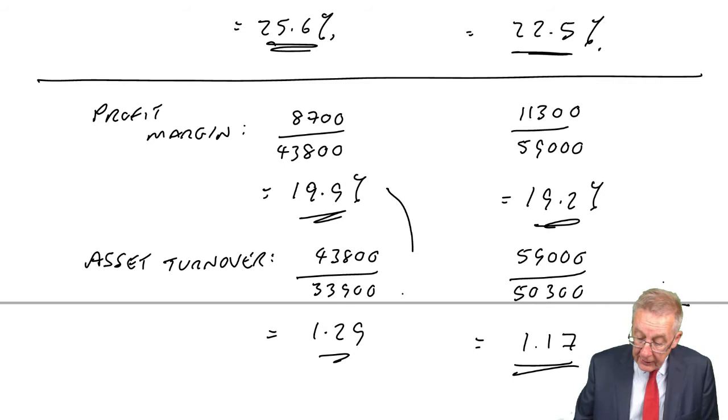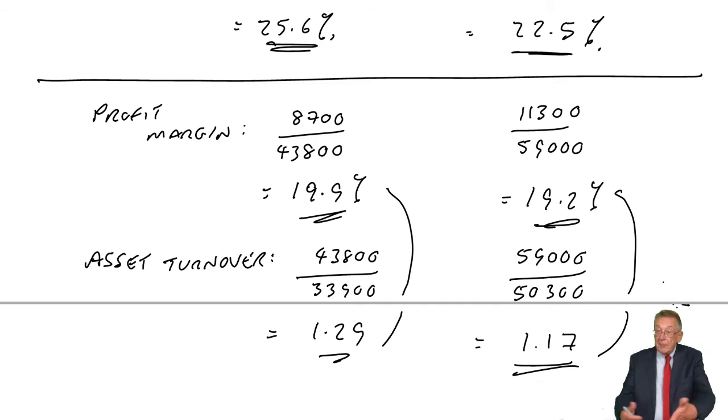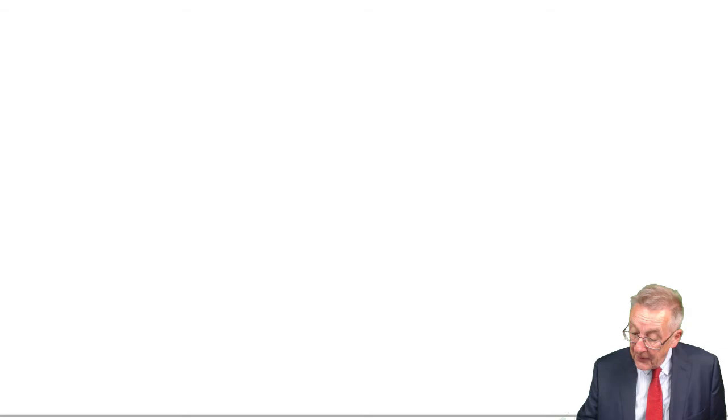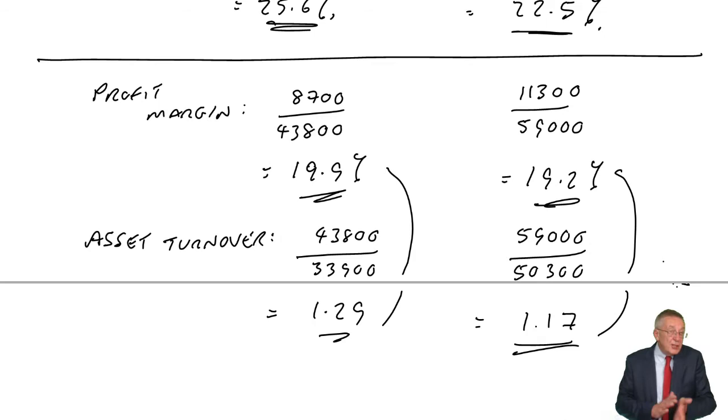It's those two together determining return on capital employed. If you multiply the two together, 19.9 times 1.29, you will get 25.6%. 19.2 times 1.17, you will get 22.5%. So profit margin is down, asset turnover is down. That doesn't look too helpful.